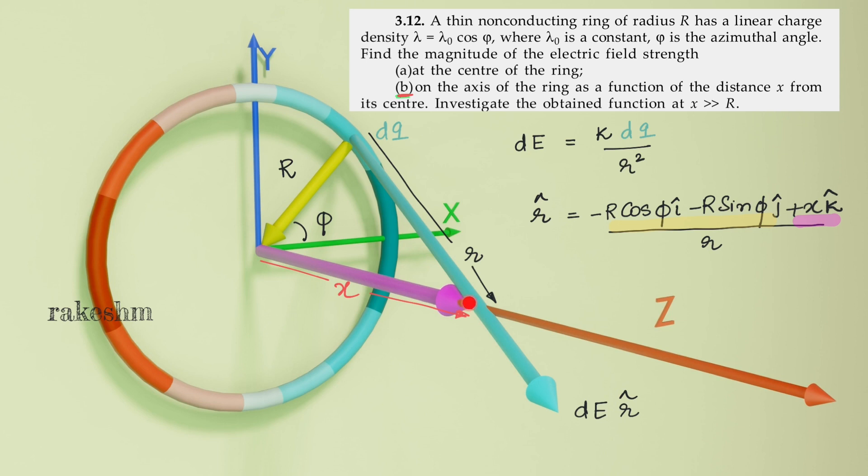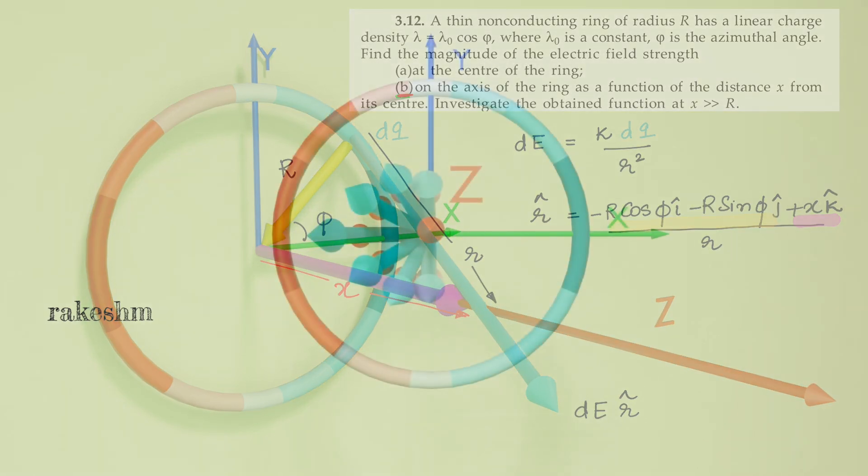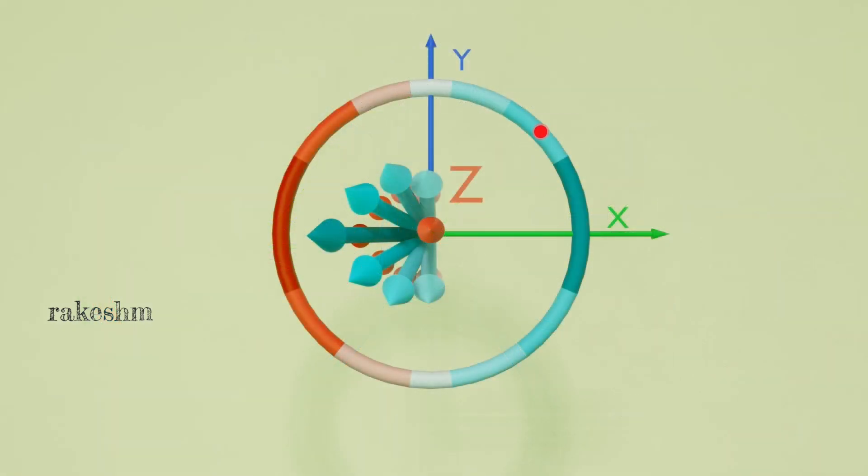Now let us draw many field lines here due to different dqs and see how it becomes really easy to solve. Here I have drawn field lines due to dq taken at different points on the ring. The blue arrows represent the field due to positive charge and the red arrows represent the field due to negative charge.